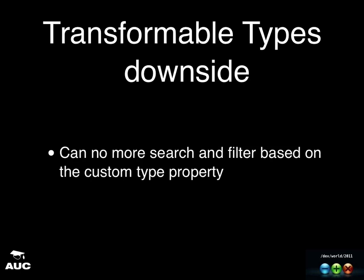There is one downside with transformable types: once you're saving something as NSData it's very hard to search and filter based on it. You'd have to come up with a clever custom filtering solution. For that reason I'd never recommend saving UIImages as transformable types — you don't want to store large binary blobs in a database; you'd rather store things you can index.